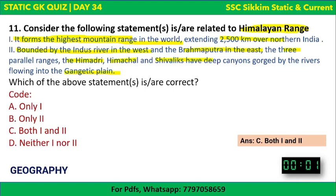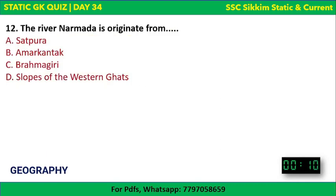The Himalayan range is indeed the highest mountain range in the world, extending 2,500 kilometers. It is bounded by the Indus in the west and Brahmaputra in the east. The three parallel ranges are: Himadri (upper Himalayas), Himachal (middle Himalayas), and Shivalik (lower Himalayas), with canyons gouged by rivers flowing into the Gangetic plain.